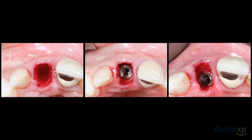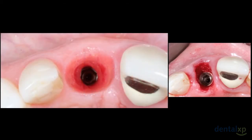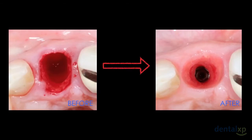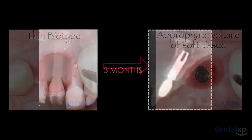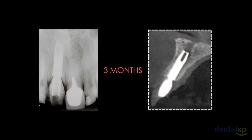Regarding peri-implant healing after three months, observe the reestablishment of soft tissue architecture with satisfactory volume according to the width of the bone reconstructed. We had a thin biotype and now we can see an adequate volume of soft tissue. The X-ray and CBCT images at three months show that the bone graft placed above the implant platform is still present.